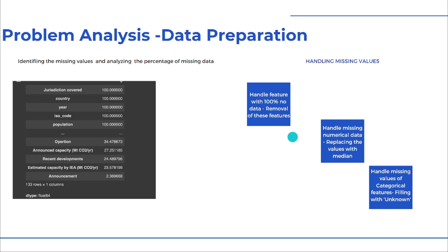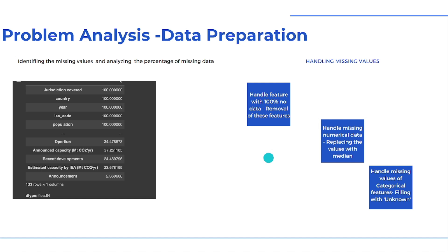For problem analysis and data preparation: first, we handled features with 100% missing data by removing them entirely. Then we handled missing numerical data by replacing values with medians. Third, we handled missing values in categorical features by filling them with 'unknown'.